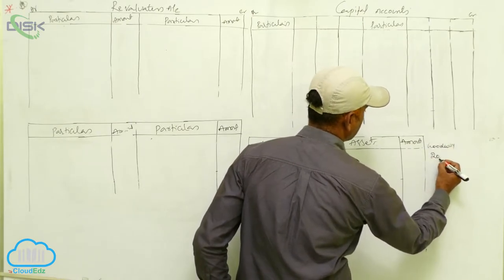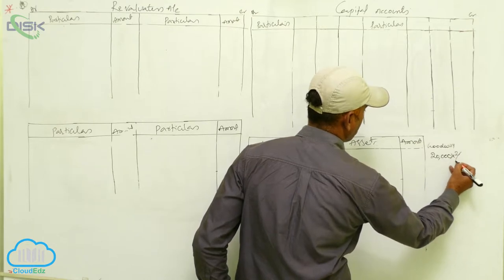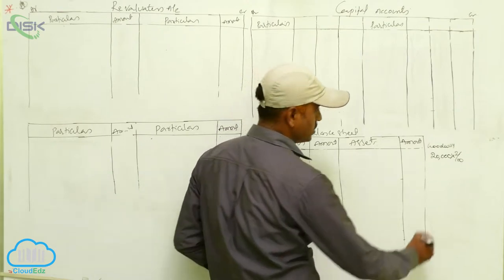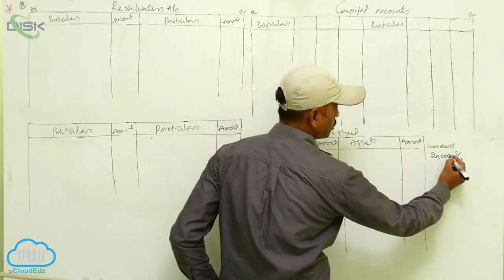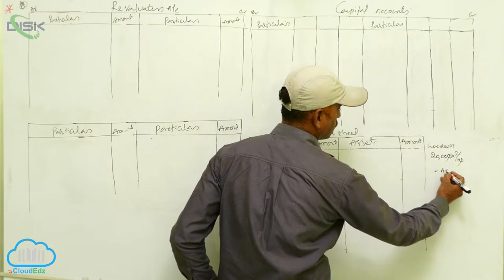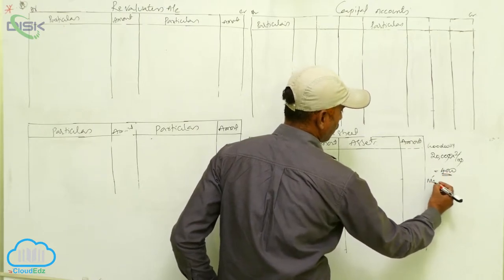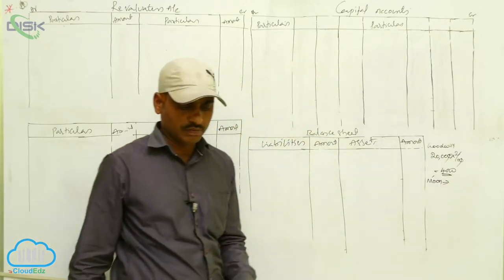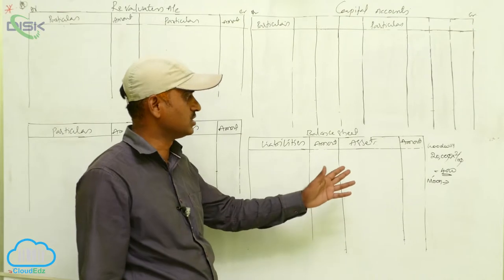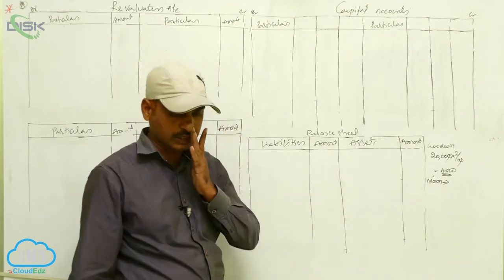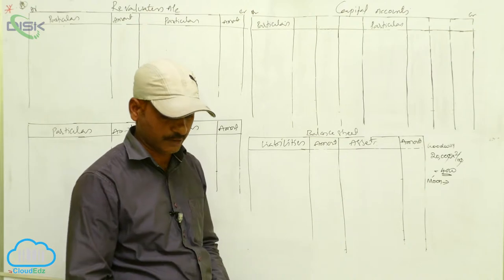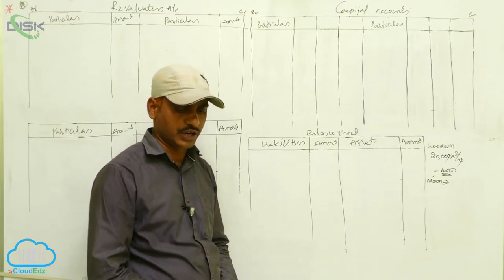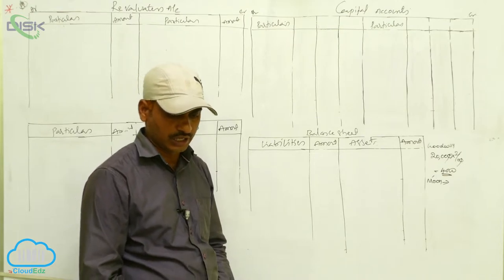Moon's share is 2/10 into ₹20,000 — cancelling zeros gives ₹4,000. So ₹4,000 is Moon's goodwill share in the total business. This ₹4,000 will be borne by the continuing partners, Star and Sun. The second adjustment is buildings revalued to ₹42,000.